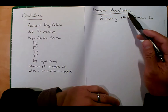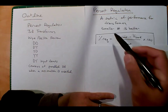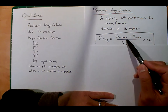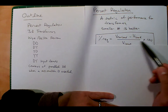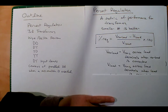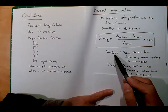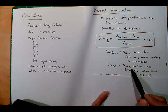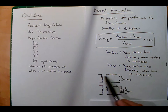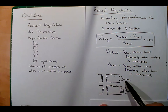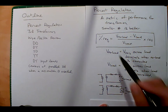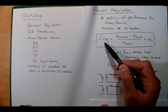Percent regulation, or percent voltage regulation, is just a metric of performance, and the smaller the number the better. The definition is: V no-load minus V load, over V load, times 100 — that's your percent voltage regulation. The no-load voltage is the RMS value across the load when nothing is connected, and V load is the RMS value across the load terminals when the load is connected. For example, your wall power might show 120 volts with no load.